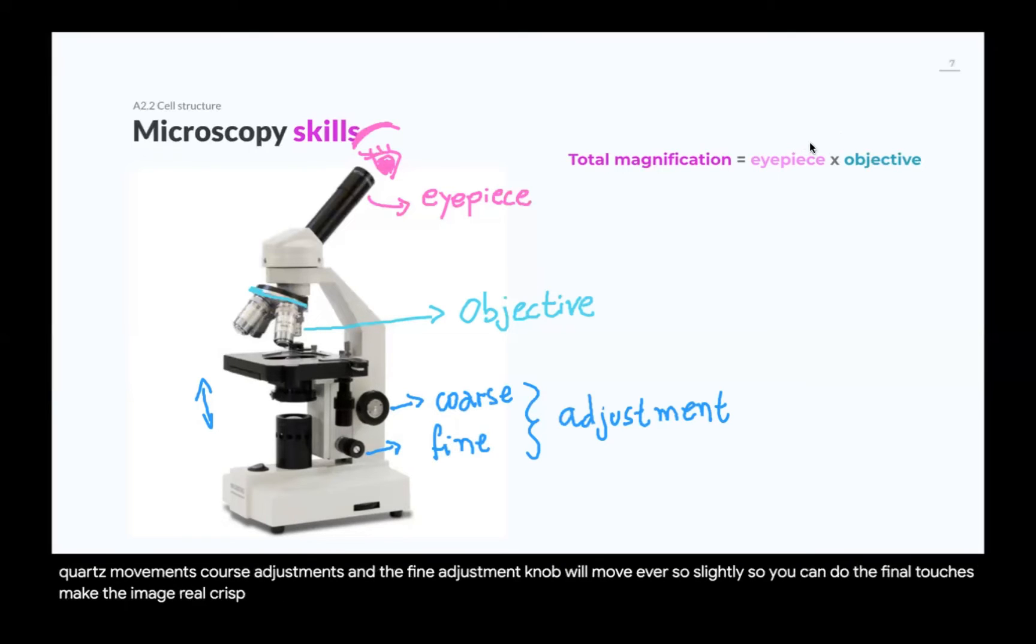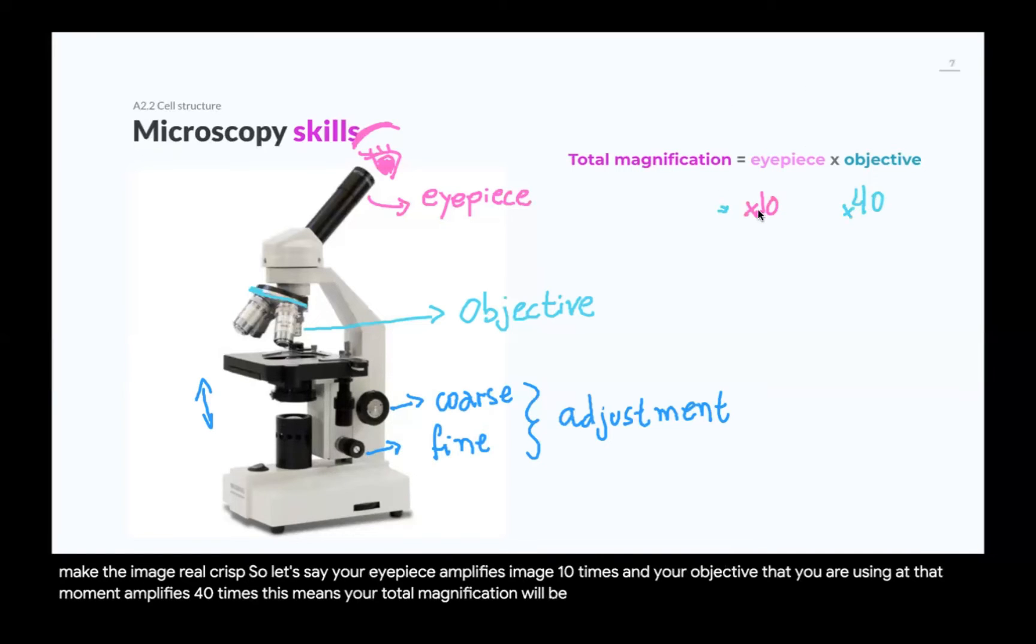Let's say your eyepiece amplifies image 10 times and your objective that you are using at that moment amplifies 40 times. This means your total magnification will be 10 times 40, 400 times.